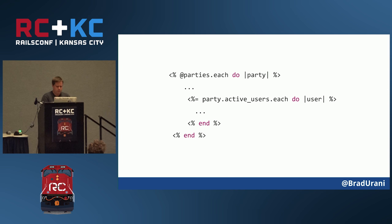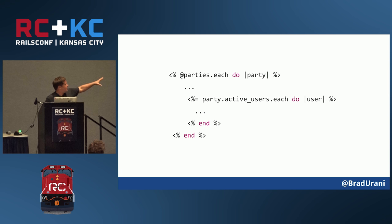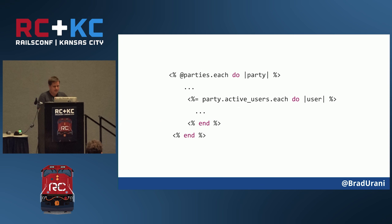And kaboom — that does not look right, does it? This is the N+1 problem. If you've done enough ActiveRecord, you've probably run into this. The reason it happens is I start with these parties and for each one I'm calling dot active_users. That's an ActiveRecord relation that has not been preloaded, so it's running a query each time.